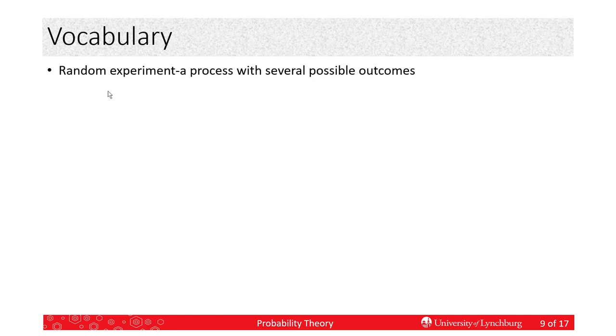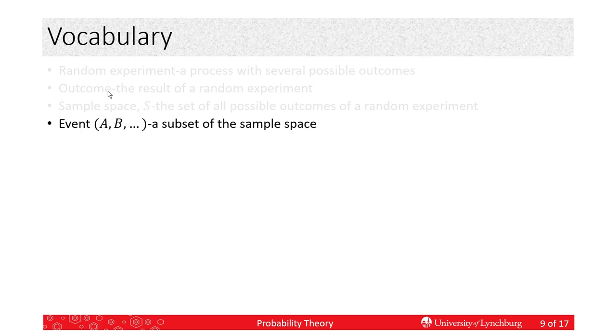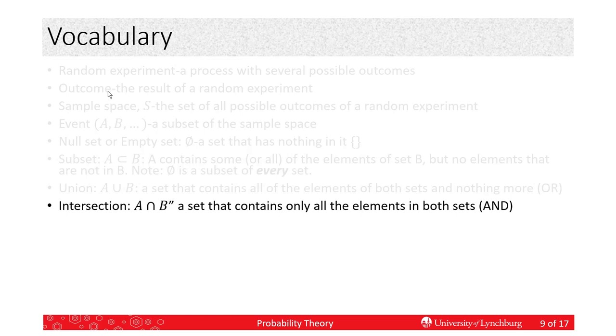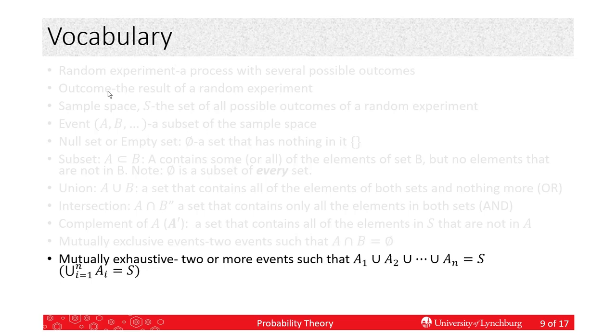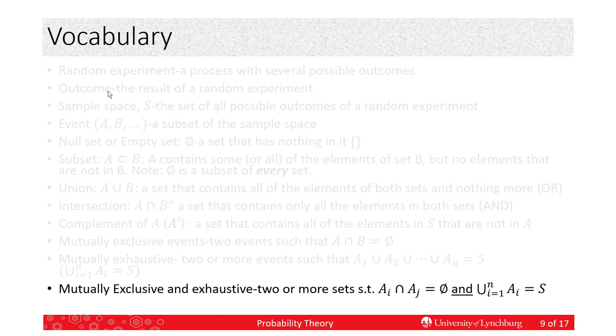So, I'm not going to go over each of these terms, but I want you to write them down and put them in your notes because it is required for your lecture notes that you take because this will help you remember them. We're going to talk about random experiment and outcome, sample space, an event, null set or empty set, a subset, a union, an intersection, a complement, mutually exclusive events, mutually exhaustive events, and events that are both mutually exclusive and exhaustive. So, you can pause the video and write those down on your notes that you're going to turn in to me.